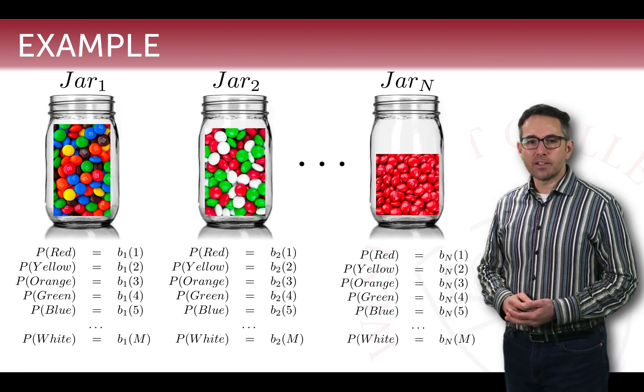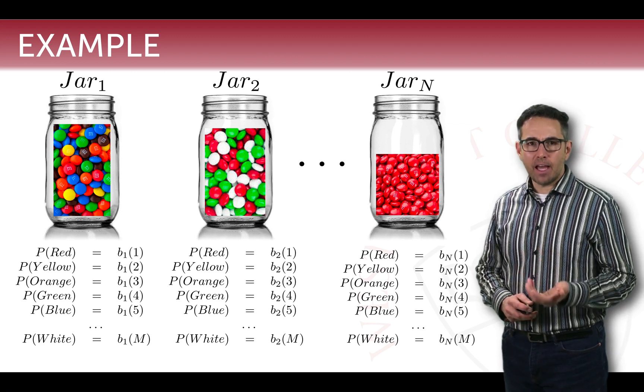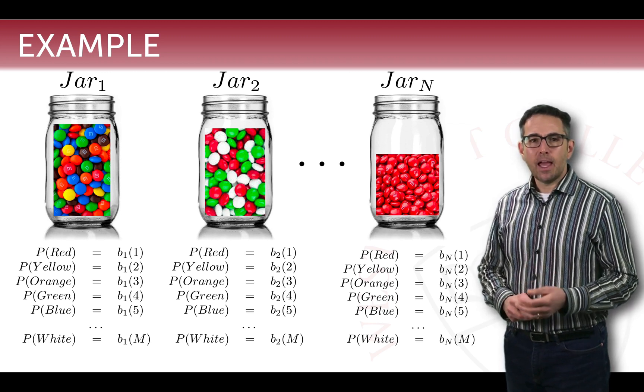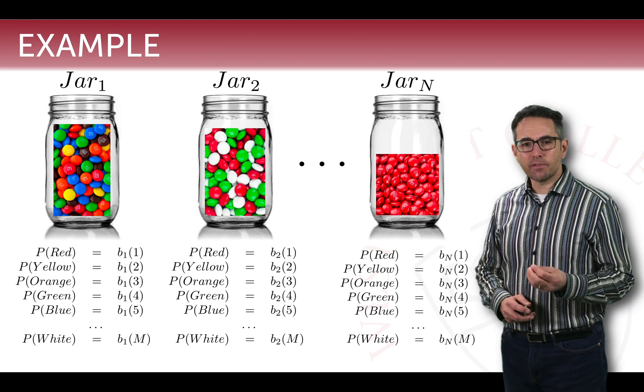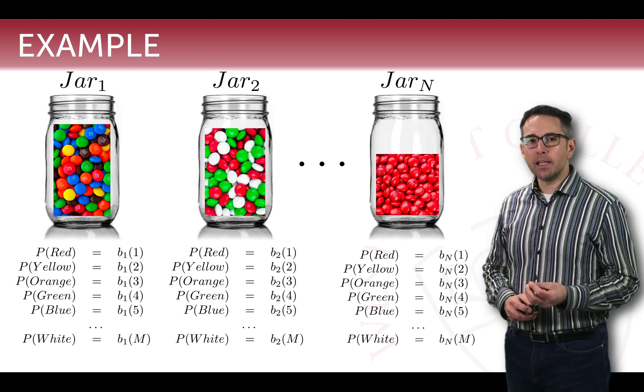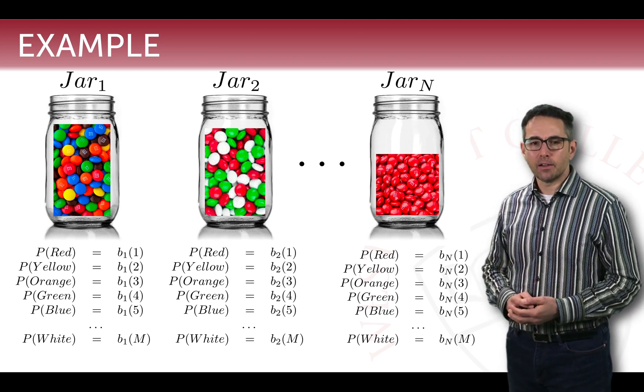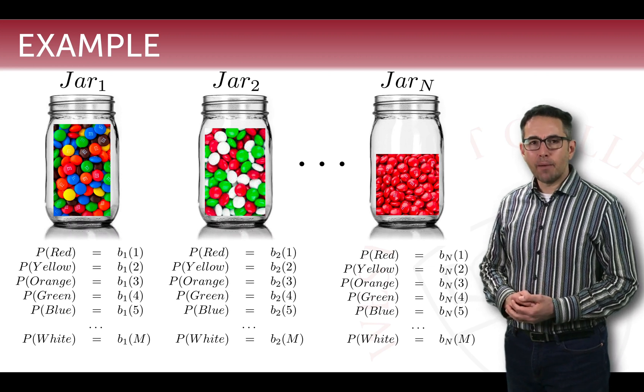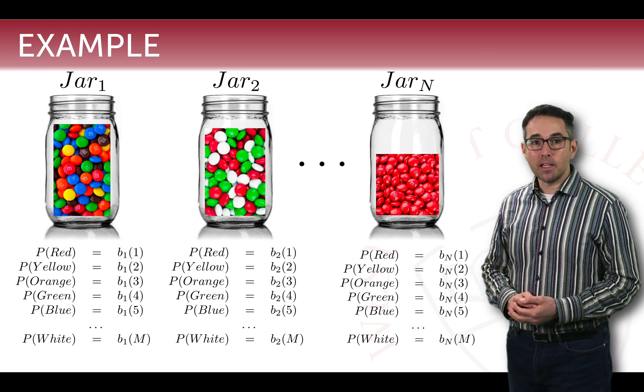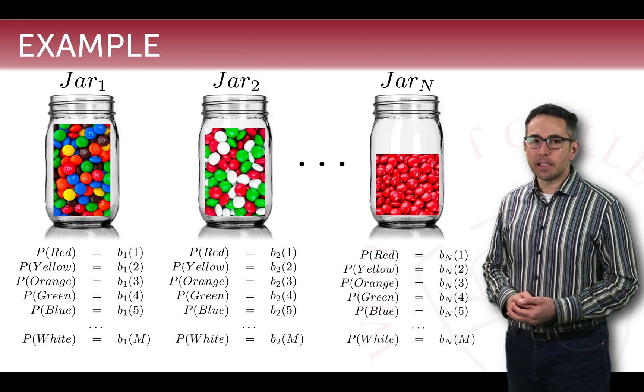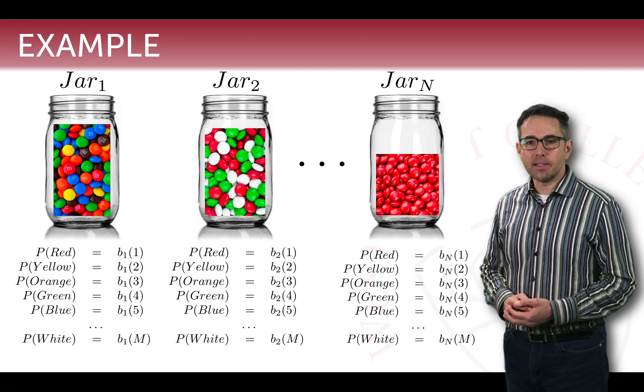Each one of these jars can have an M&M chosen from it. And when an M&M is chosen from it, there's some probability of getting a particular color. So for example, in jar N, the probability of getting a red M&M is 1, and the probability of getting any other color M&M is 0.